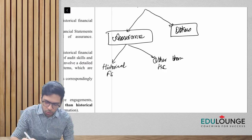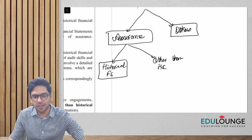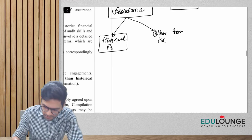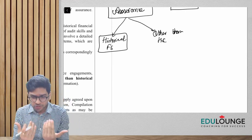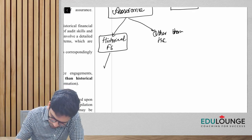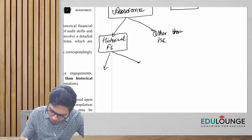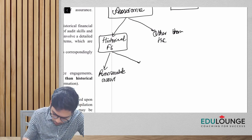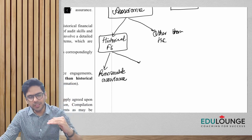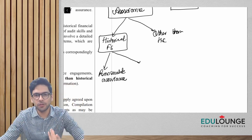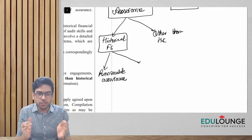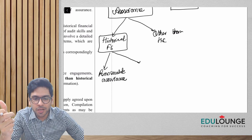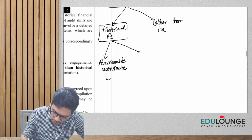If your subject matter is historical financial statements and you give reasonable assurance — a high level of assurance but not absolute assurance — to the users of the financial statement that the statements give a true and fair view, then this particular work is called audit. Reasonable assurance means a high level but not absolute level of assurance.